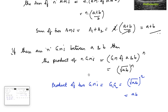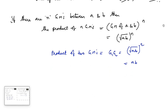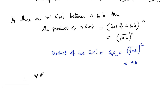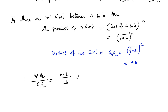Therefore, (a1 + a2) / (g1 × g2) = (a + b) / (ab). So (a + b) upon ab is the answer.